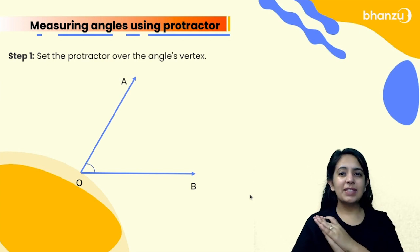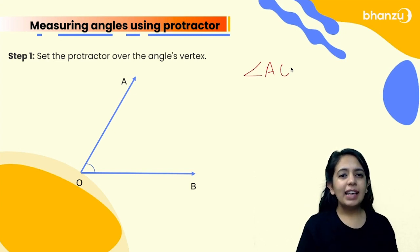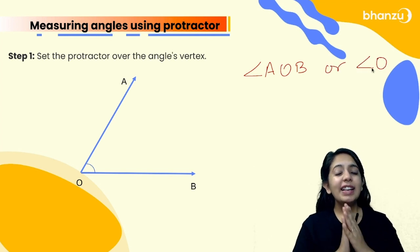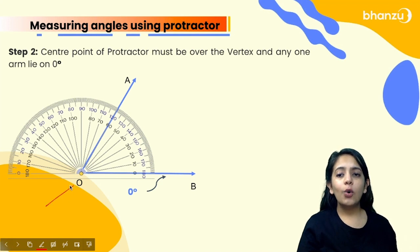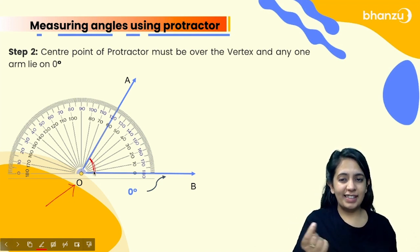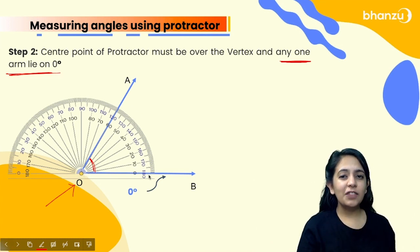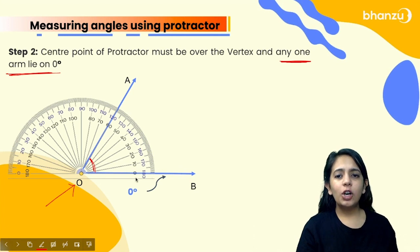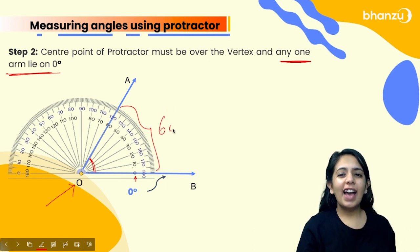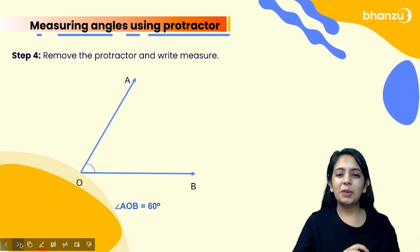Now let's see how to measure an angle using the protractor. We have an angle here — the vertex is at point O, so its name is angle AOB or simply angle O. First, place the protractor's center point over the vertex of the angle. Also, put one arm of the angle on the 0-degree line — here, the 0-degree line is placed on arm OB. Now measure: start from 0°, then 10°, 20°, 30°, 40°, 50°, 60° — the angle has taken 60 degrees. Therefore angle AOB equals 60 degrees.